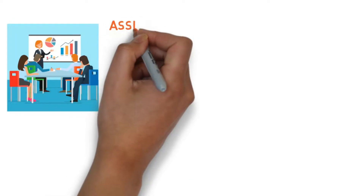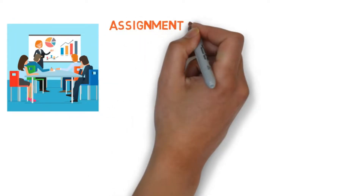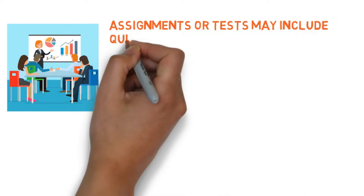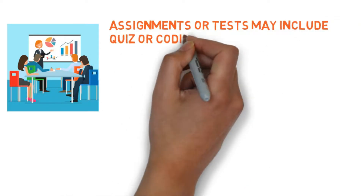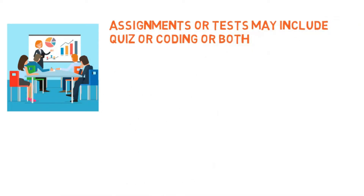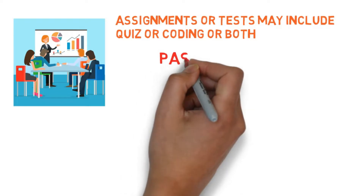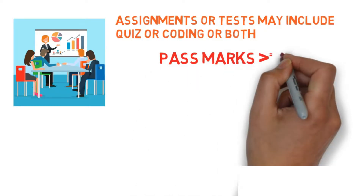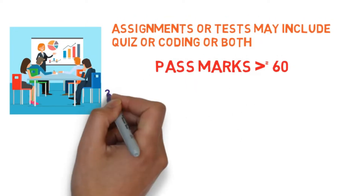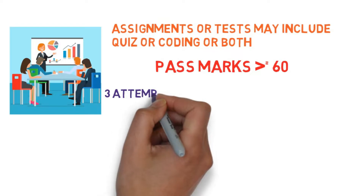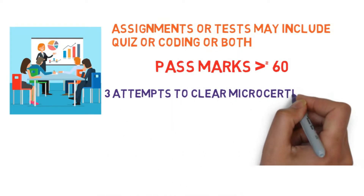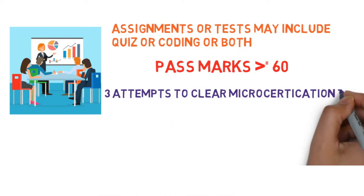These assignments or tests may include quiz or programming questions or both. For passing in quizzes, assignments, or the micro-certification test, you will have to get at least 60%, and you will be given a maximum of three attempts to clear the micro-certification test.